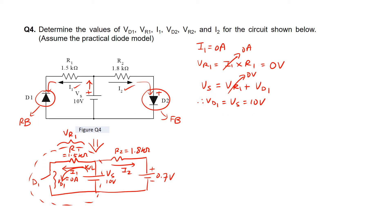Now we will calculate the three remaining parameters on the right hand side: VD2, VR2, as well as I2. For VD2, since diode D2 is forward biased, it's replaced by a battery of 0.7 volts, hence VD2 is 0.7 volts.